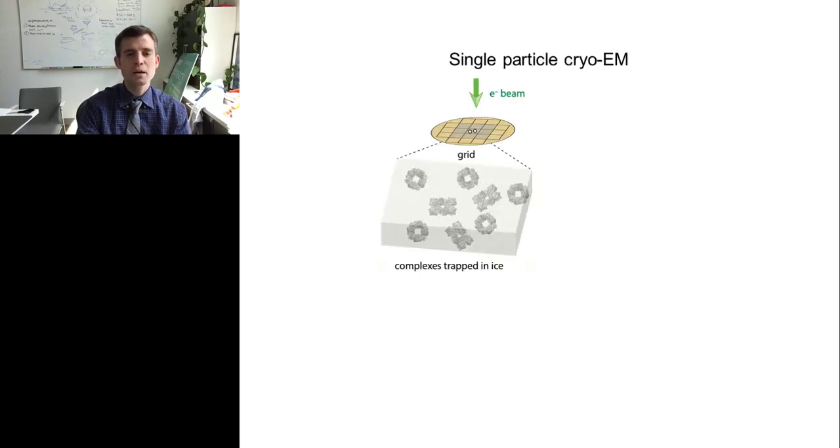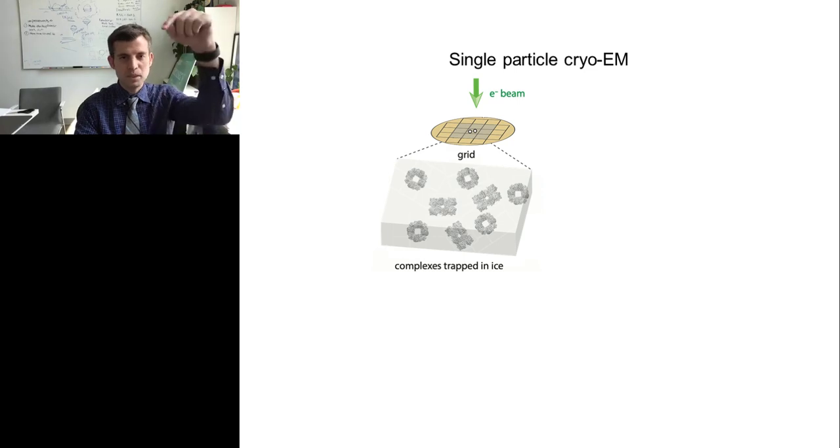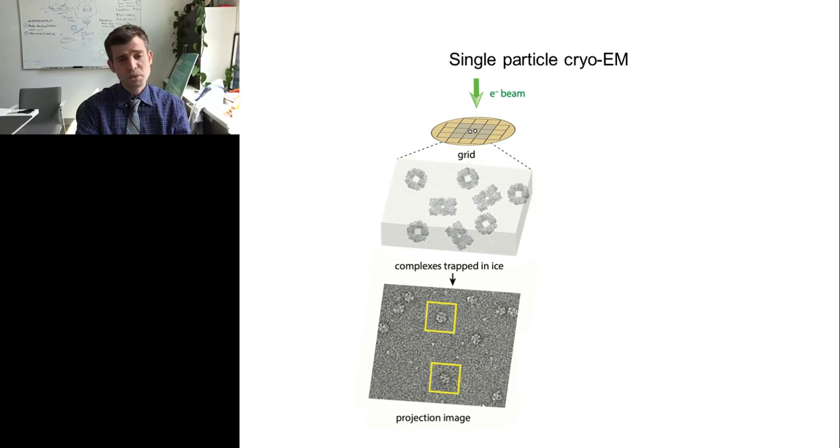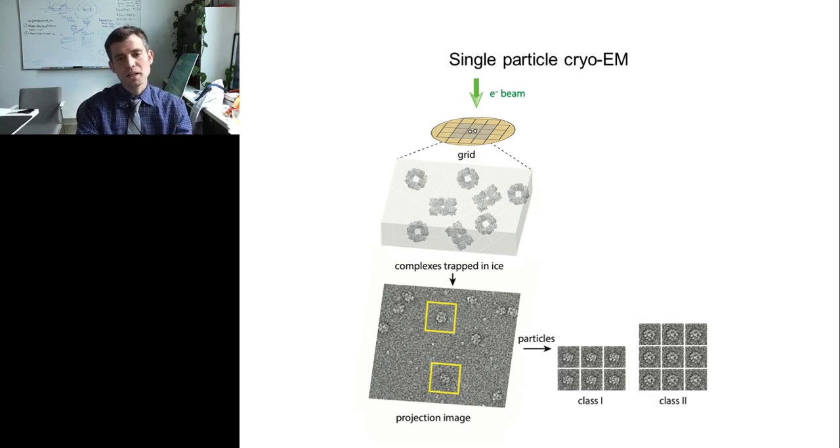So, in single-particle cryo-EM, what we do is we bring an electron beam through the sample, and the particles are trapped in ice. As the electron beam comes through the sample, it creates a projection image. That projection image is noisy, and it has our particles trapped in all orientations, which allows us to later create the 3D structure, but we have to get rid of that noise first. In order to get rid of the noise, what we do is we box out individual particle images. After boxing out those individual particle images, we're able to classify them into discrete groups, usually based on the projection view that the particle exists in.